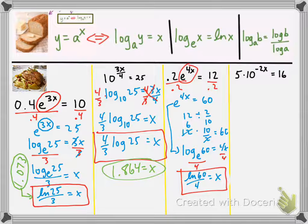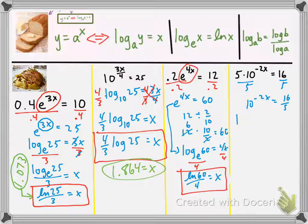Okay, and then our last example. I try to keep these videos under 5 minutes, but we're running over a little bit here. So, we're going to divide both sides by 5. So, we have 10 to the negative 2x equals 16 over 5. And then, we're going to convert this to log form. So, we have log base 10 of 16 over 5 is equal to negative 2x.